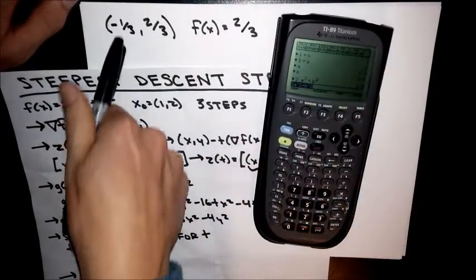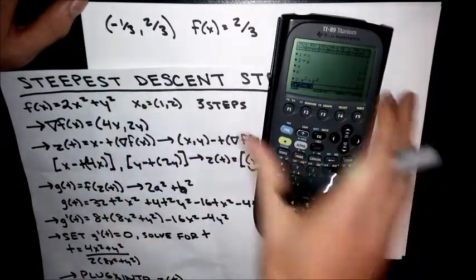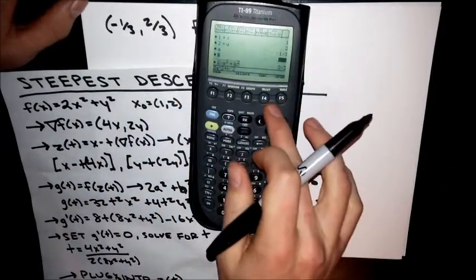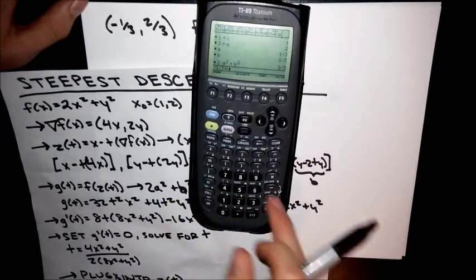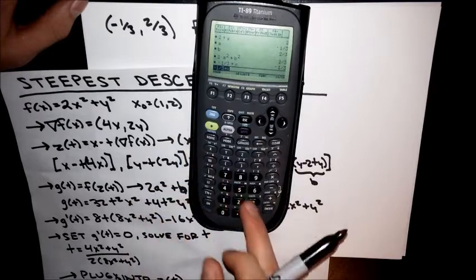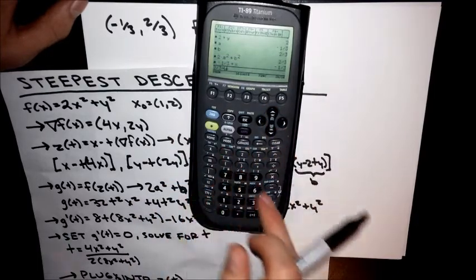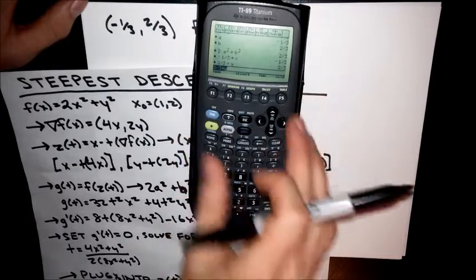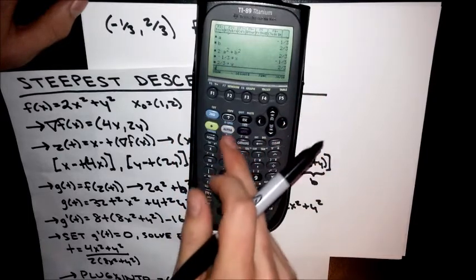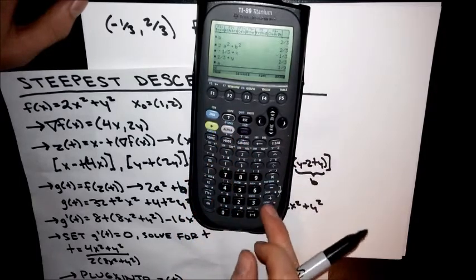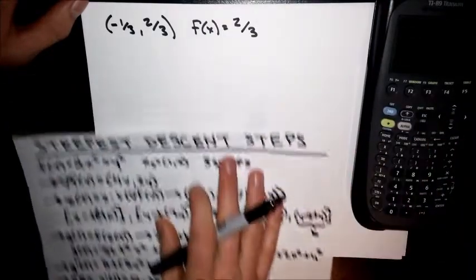Now we're going to plug this as our X and our Y. So negative 1/3 stored as X, 2/3 stored as Y. And now I'll just repeat A and B. And I get 1/9 and 2/9.